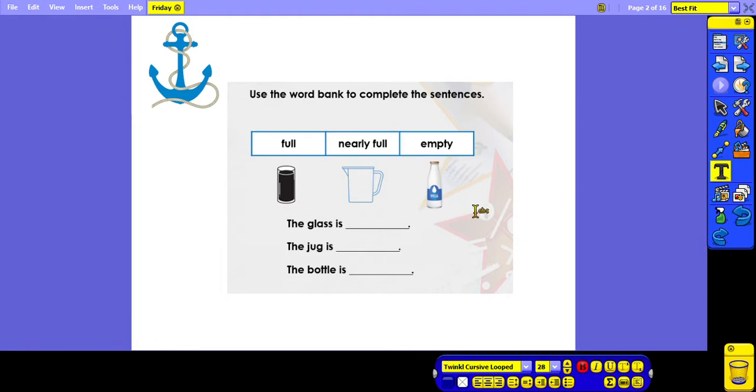We need to look at these images and decide which word best describes the image. So we can see that the glass is not completely full but it is nearly full, it's not far from the top. The jug has got no liquid in at all, so that one is empty. And the bottle is full to the top with milk, so this one is full.